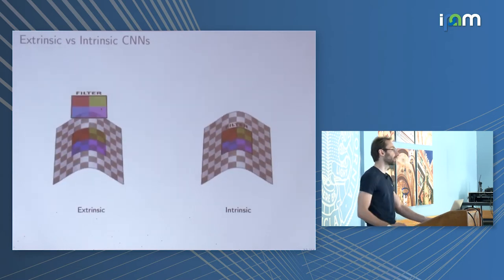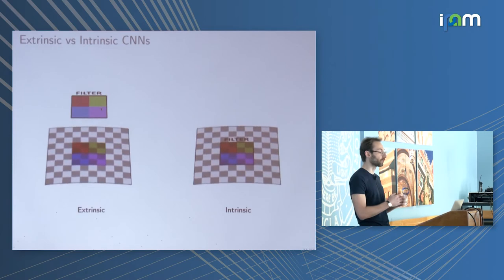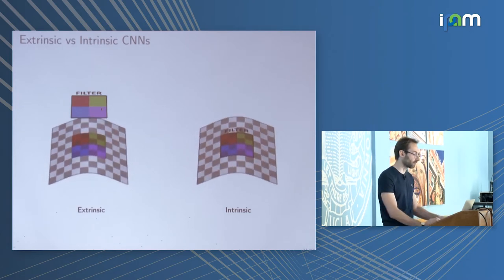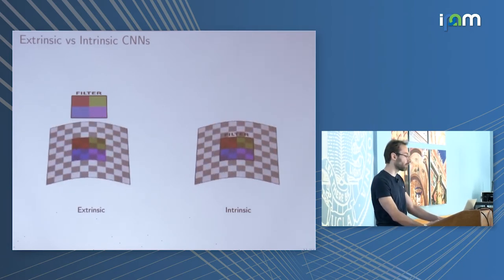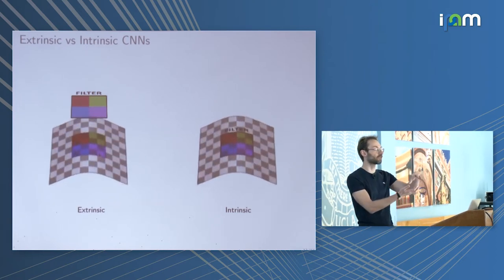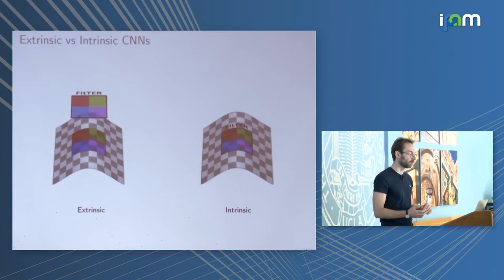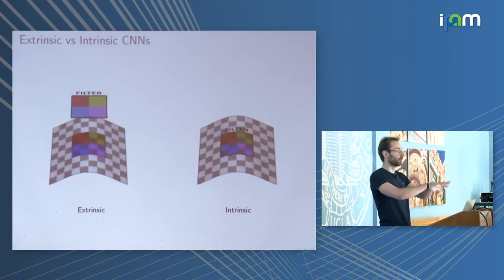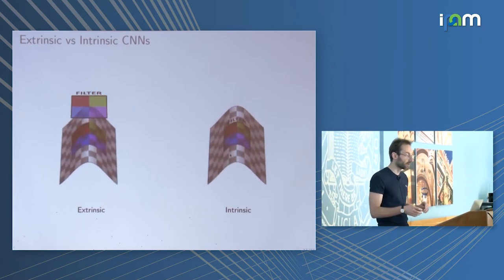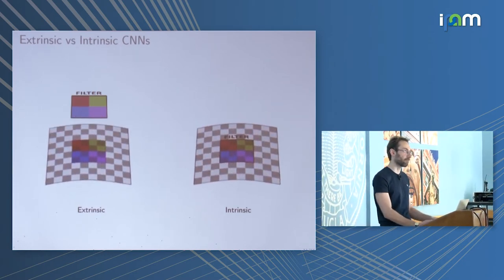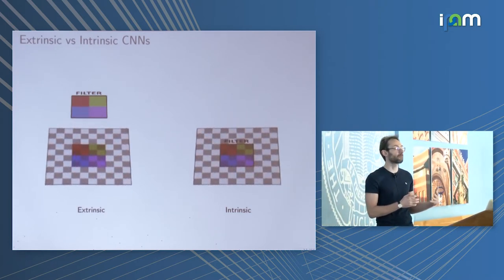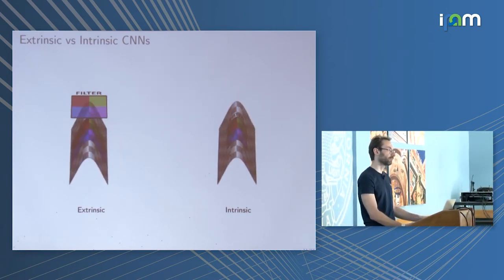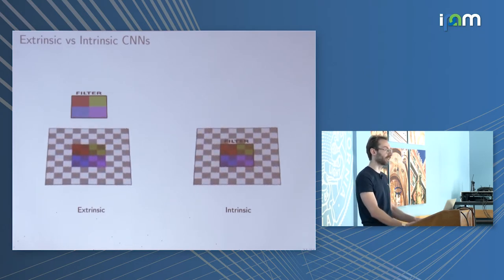We want to produce similar results but training on only 100 examples with orders of magnitude fewer parameters and much shorter training time. The key idea is that we don't want to consider the shape as a 3D Euclidean object, but intrinsically as a manifold. In the Euclidean view, when we deform a surface the filter output changes because the underlying structure changes. We want to define the filter on the surface itself, so when we deform it isometrically the result of applying the filter remains the same — invariance to deformations is built into the network architecture by construction.